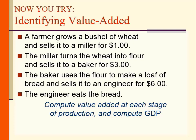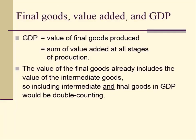At the last stage, the engineer eats the bread. So at each stage: the farmer's value added is $1, the miller's is $2, and the baker's is $3. GDP equals the sum of all three stages: $1 plus $2 plus $3 equals $6, which is equal to the final price of the bread. The lesson is that GDP equals the value of final goods, which also equals the sum of value added at all stages of production. Including both intermediate and final goods in GDP would be double counting.